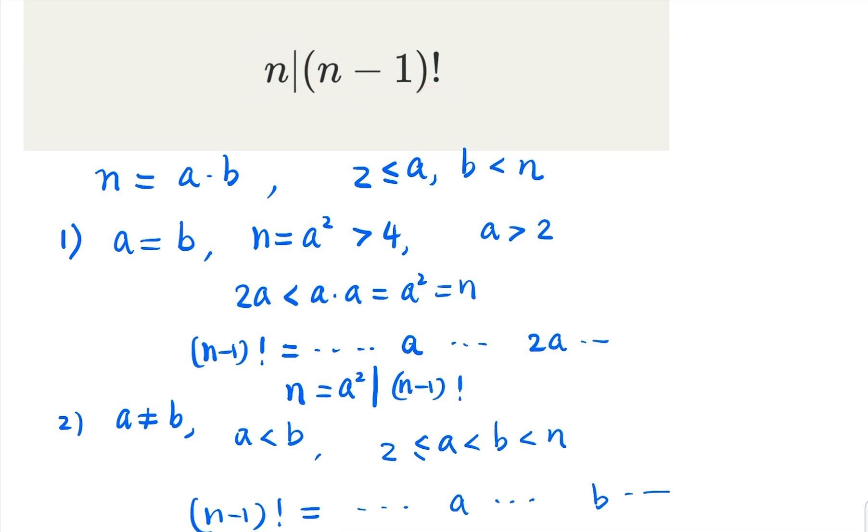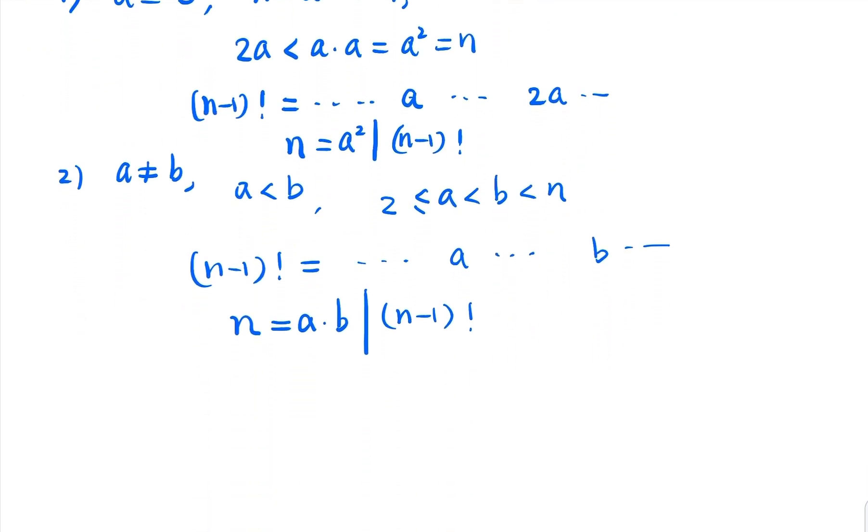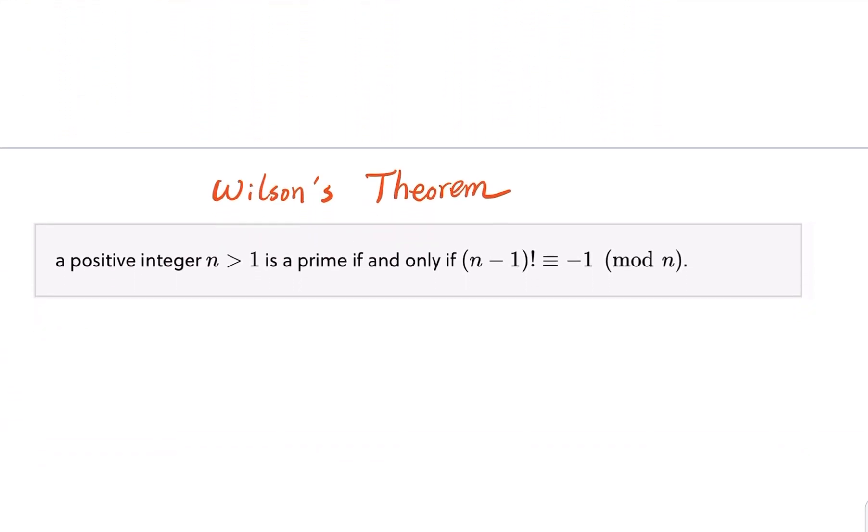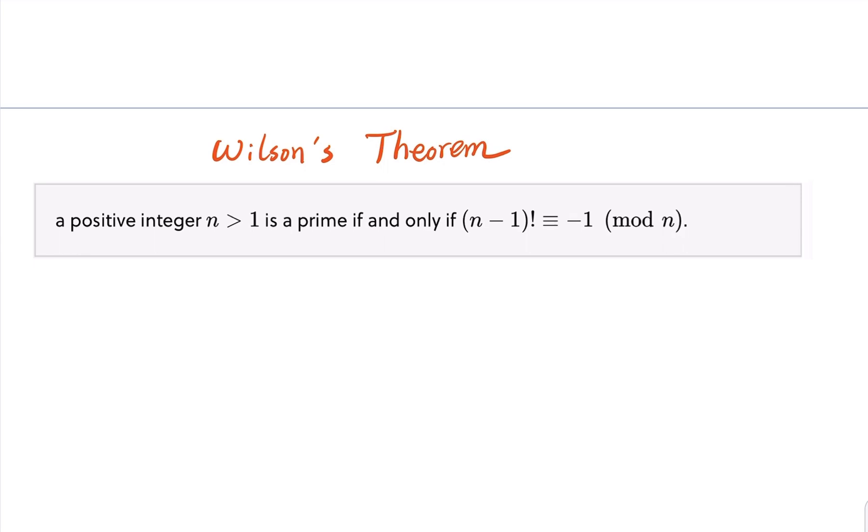So this is actually different from when n is a prime number, in which case we have what is called Wilson's theorem, saying that if n is a prime number, then (n-1) factorial is going to be congruent to negative 1 mod n. That's an important property for prime numbers.